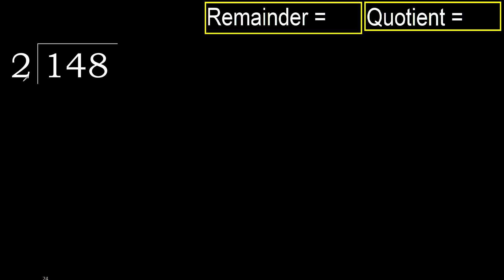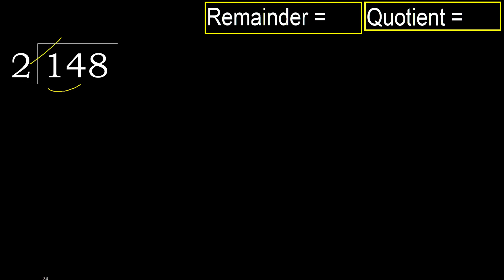148 divided by 2. 1 is less, therefore next. 14 is not less, therefore with 14: 2 multiplied by which number is nearest to 14?